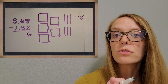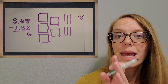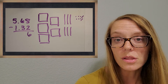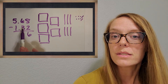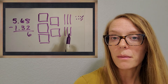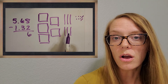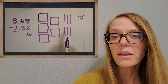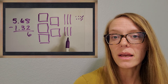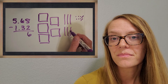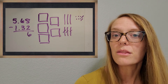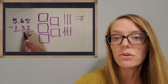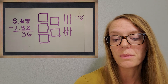Then we're going to move over to the tenths place, that other decimal place, and we're going to use those longs. Since 10 of them make up a whole, we're going to use those longs as the tenths. We have 6 of them. Take away 3 and what do you get? You get 3 tenths left over — 3 longs. So we're going to use 3 as our answer in the tenths place.